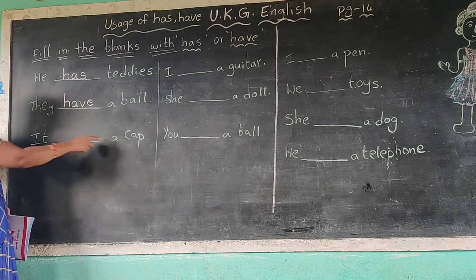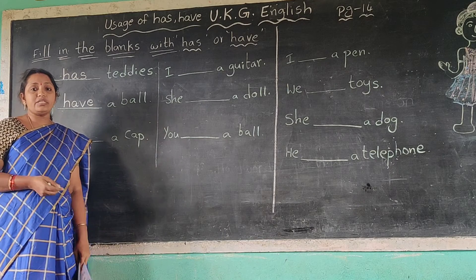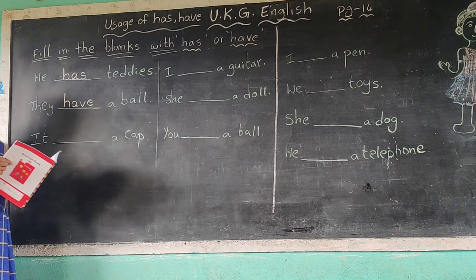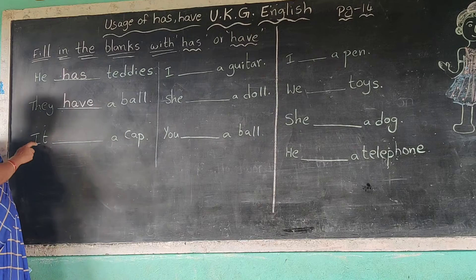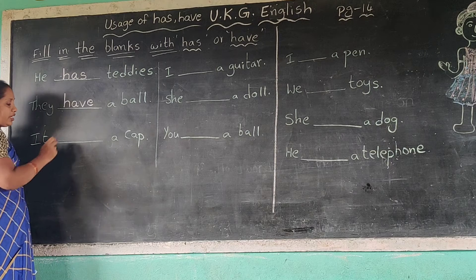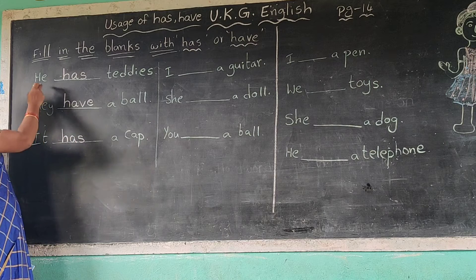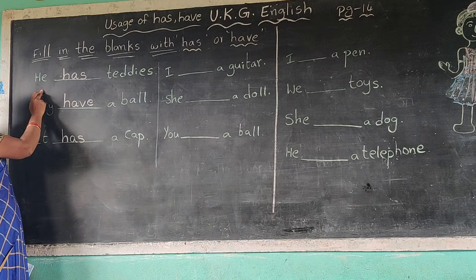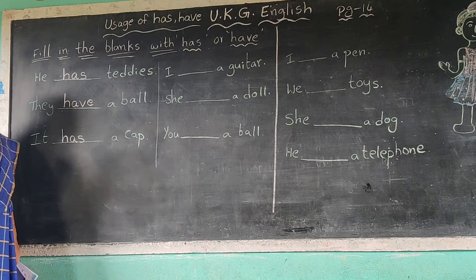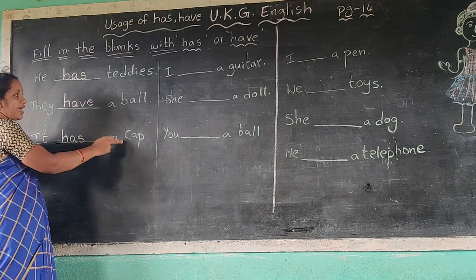Next: it dash a cap. What is the word? It — 'it' is an animal reference here. It has a cap or have a cap? Has. It has a cap. H-A-S, has. He, she, it — has. I, we, they, you — have. It has a cap.